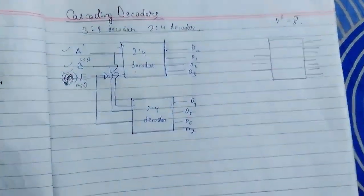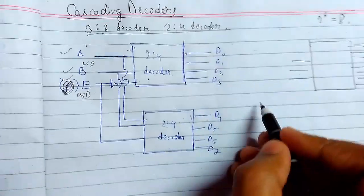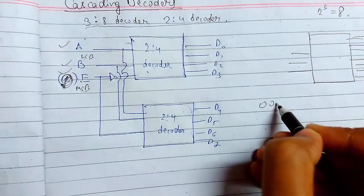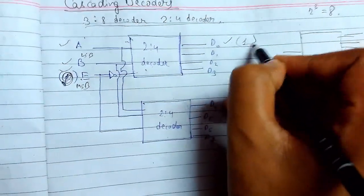For the first case let me show you how the circuit works. Suppose we are entering 0, 0, 1. So this will become high.